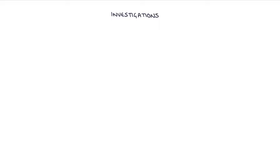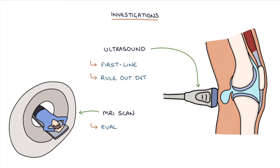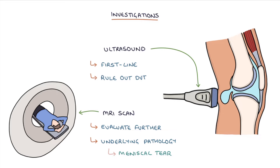Ultrasound is the usual first-line investigation to confirm the diagnosis and can also be used to rule out a deep vein thrombosis. An MRI scan can be used to evaluate the cyst further if required, for example before surgery, and can also demonstrate underlying knee pathology such as a meniscal tear.